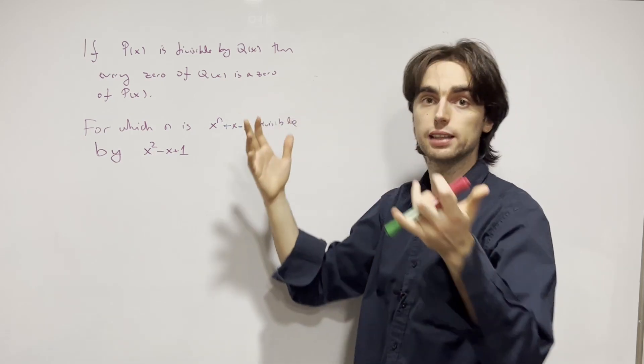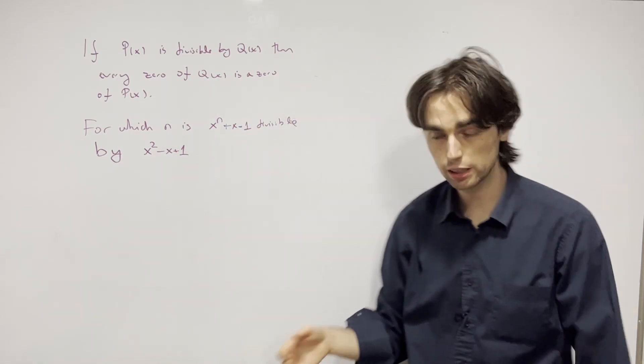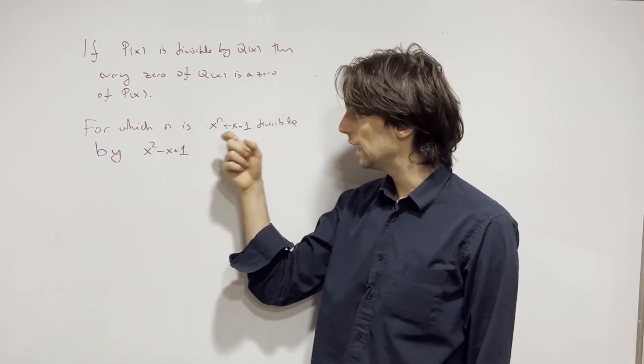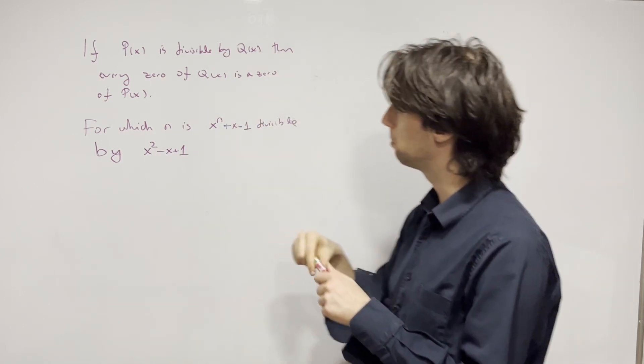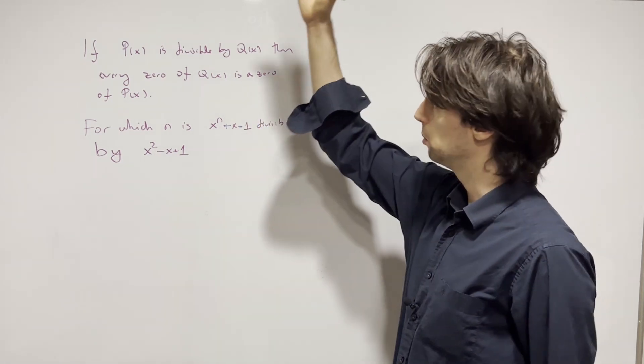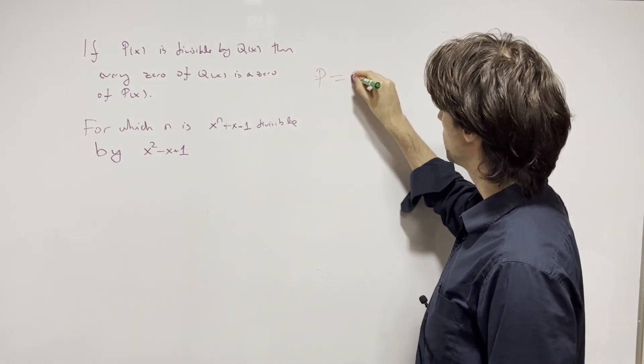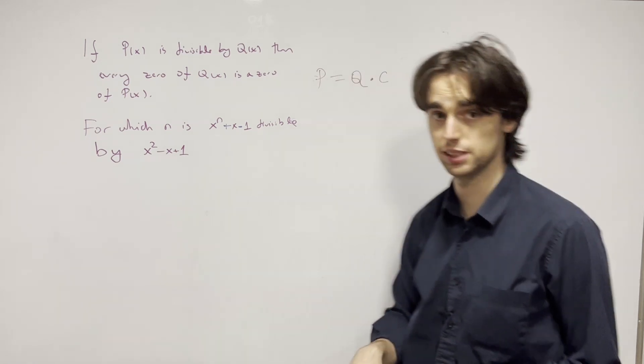For divisibility of polynomials, polynomial p is divisible by polynomial q if there exists a unique polynomial c such that p equals q times c. In other words, for the unique representation of p and q as q times c plus r, where the degree of r is less than the degree of q.